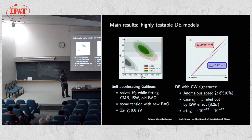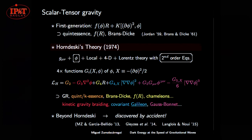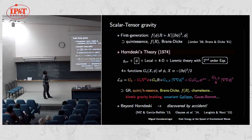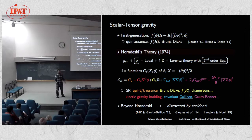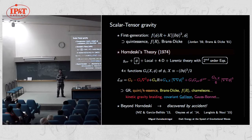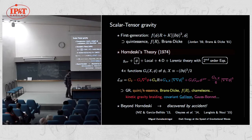I usually introduce Horndeski theory as a nice framework to put together many very different theories studied in different regimes: GR, quintessence, k-essence, Brans-Dicke, f(R), chameleons, kinetic gravity braiding, different types of Galileons, and Gauss-Bonnet terms can all fit into this description. The equations have been derived and you have a lot of information to test very general theories in one stroke. There are also theories beyond Horndeski, which I mention for completeness.